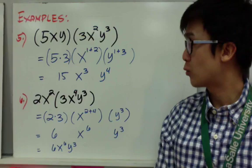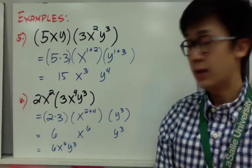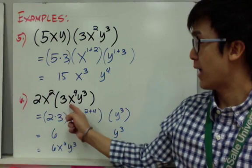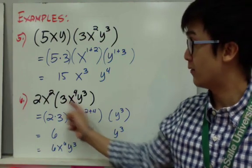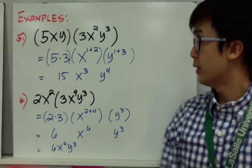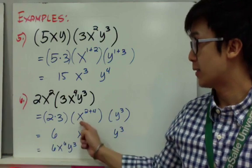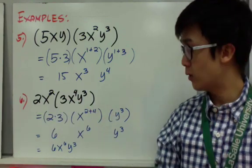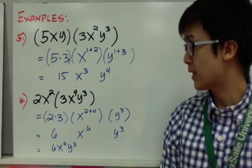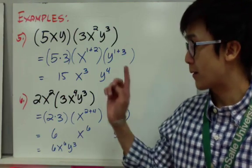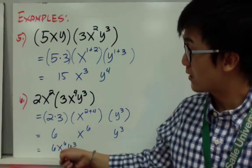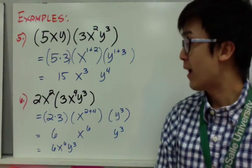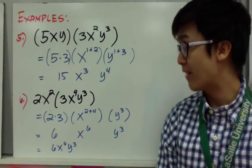For number 6, I am multiplying 2x squared by 3x to the fourth y cubed. I separate each term: multiplying 2 and 3, multiplying x squared and x to the fourth, and since y has nothing to multiply with, I just copy y cubed. Simplifying: 2 times 3 is 6, x raised to 2 plus 4 is x to the sixth, and y cubed stays as y cubed, giving 6x to the sixth y cubed. A common error is trying to combine x to the sixth and y cubed — remember, you cannot combine variables that are different.